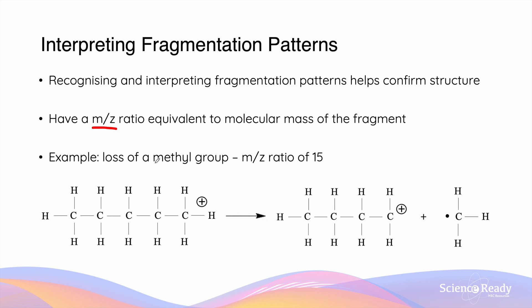For example, let's say that we lost a methyl group. Here we have an ion of the molecule pentane. The carbon-carbon bond between carbons 1 and 2 is cleaved to form this C4H9 fragment and also the CH3 fragment. This methyl group is going to have an m-to-z ratio of 15 because the molar mass is equal to 12 for carbon, plus 1, 2, 3, which equals 15.